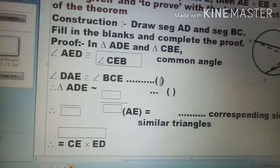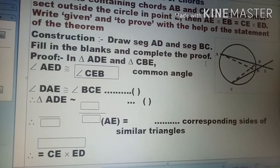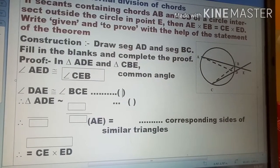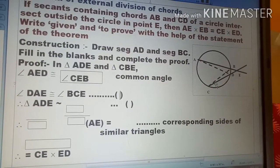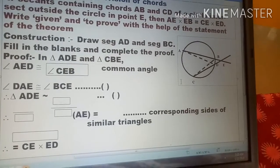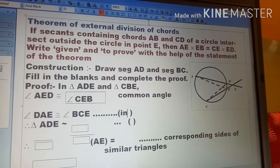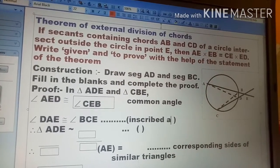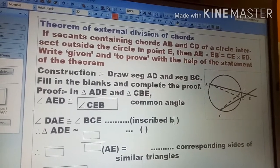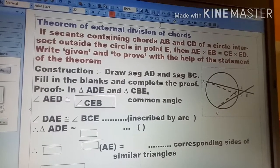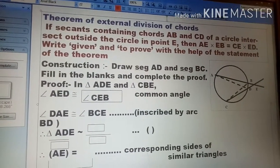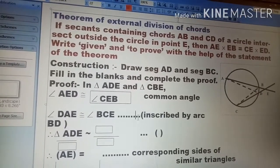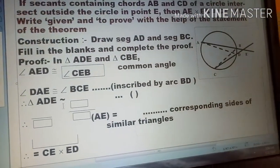Why these two angles are equal to each other, angle DAE and angle BCE. You can see here, DAE this angle is DB arc inscribed angle. Angle BCE, this is BD angle inscribed. Both angles are inscribed by the same arc, that's why both are equal. So we can write here inscribed angle, angle inscribed by arc BD.